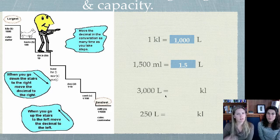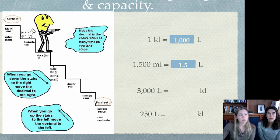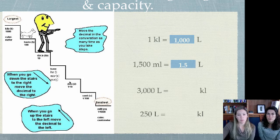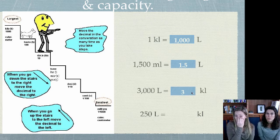And the next one. Hopefully this is starting to click with you. 3,000 liters. So I am now on my base. My base is 3,000. And I'm going to kiloliters. So kilo is up here. So I'm going to be climbing 1, 2, 3 to the left. So I'm going to move my decimal 1, 2, 3 to the left. I should end up with just 3. Or if I wanted to put my decimal in 3.0. But 3 kiloliters.